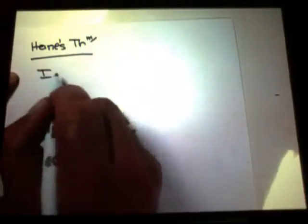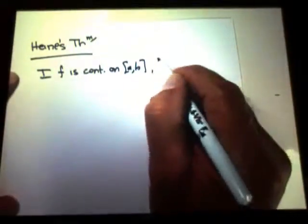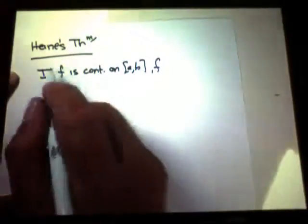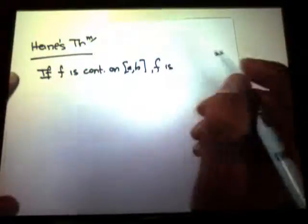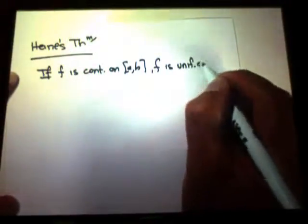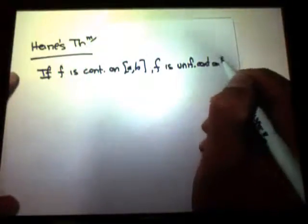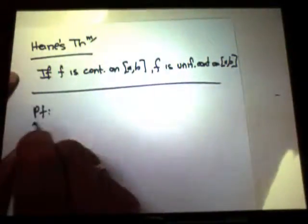If F is continuous on [a,b], F is uniformly continuous on [a,b]. Innocently stated. Not so easy to prove.